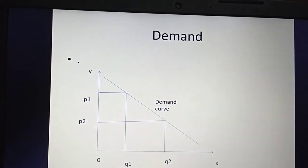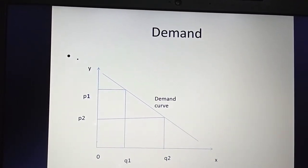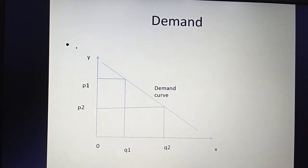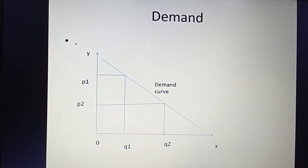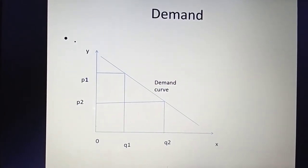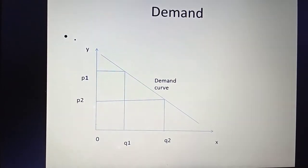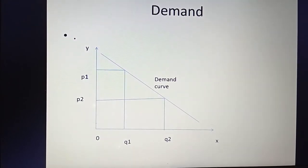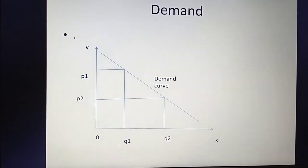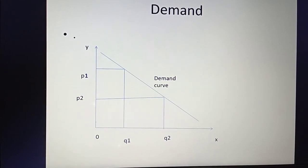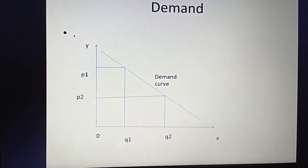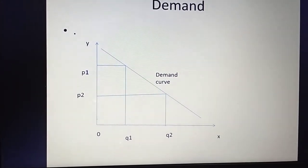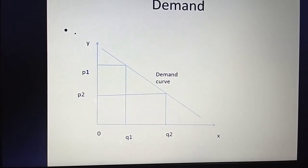The term demand can be better understood with the help of the given diagram. In the diagram there is one x-axis and one y-axis. The origin is given by the term O. The x-axis, that is OX, represents the quantity of a commodity, and the OY-axis represents the price of the commodities. So on the x-axis we measure the quantity demanded of a commodity, and the OY-axis represents the price of the respective commodities.